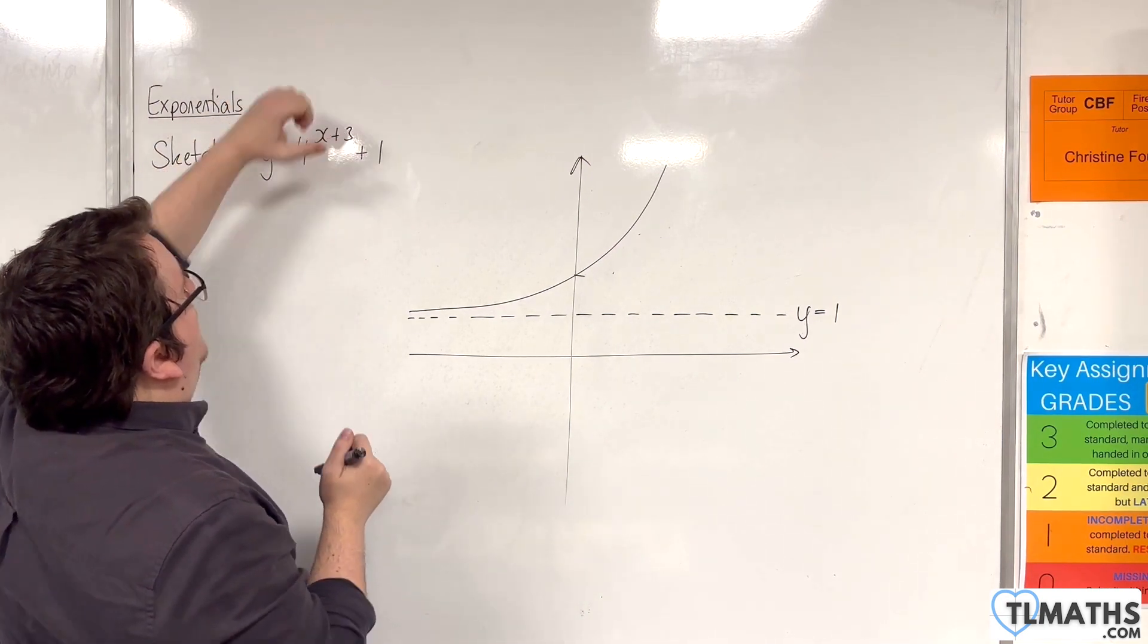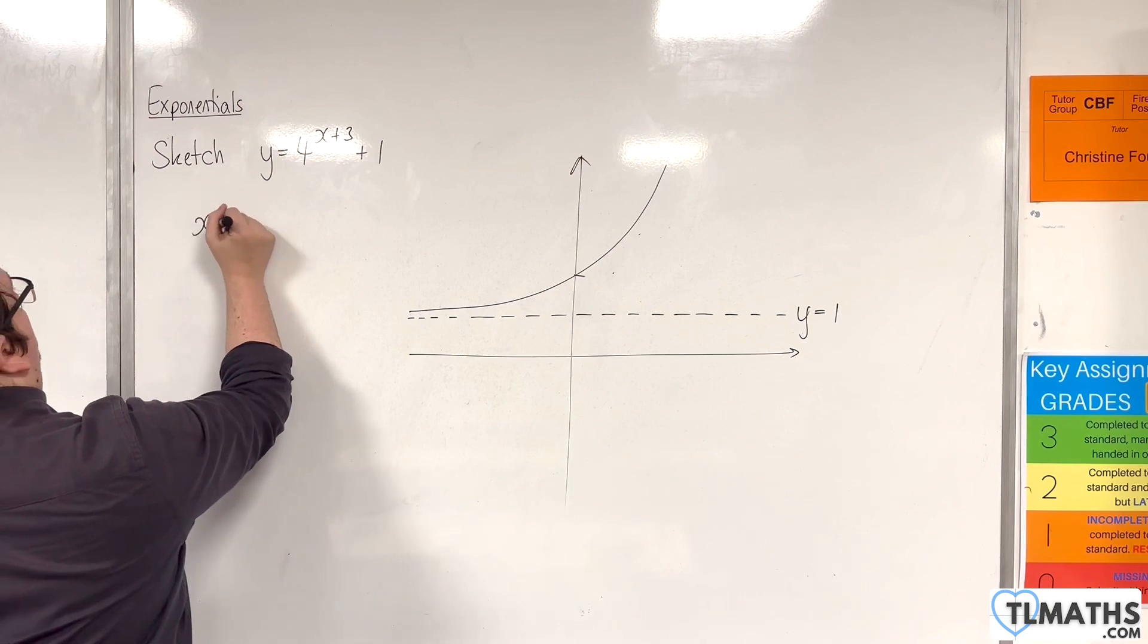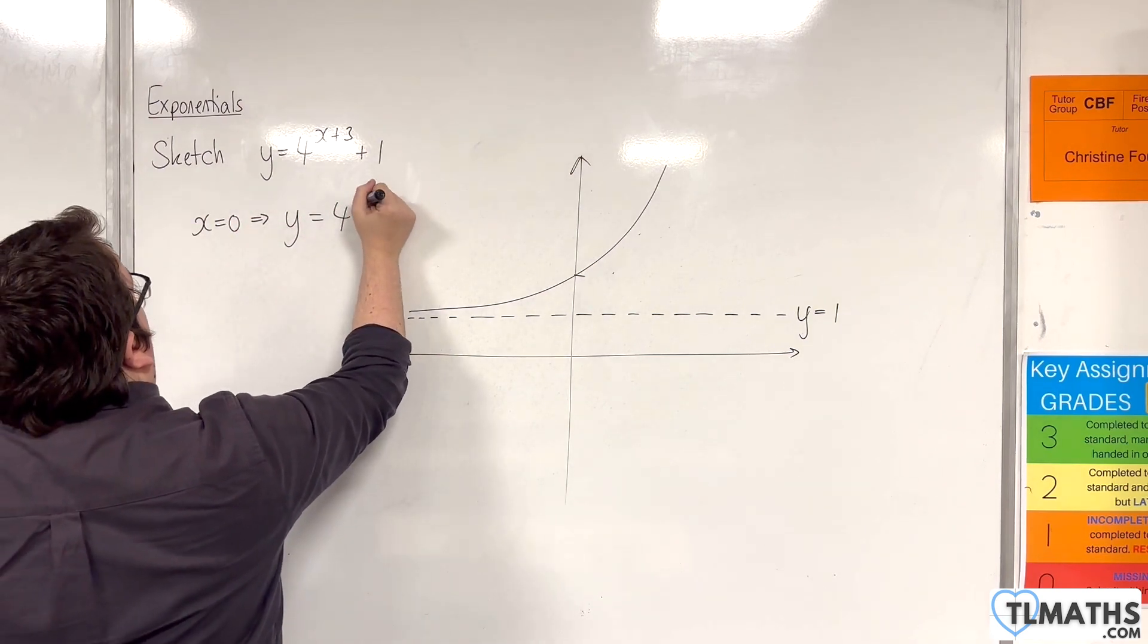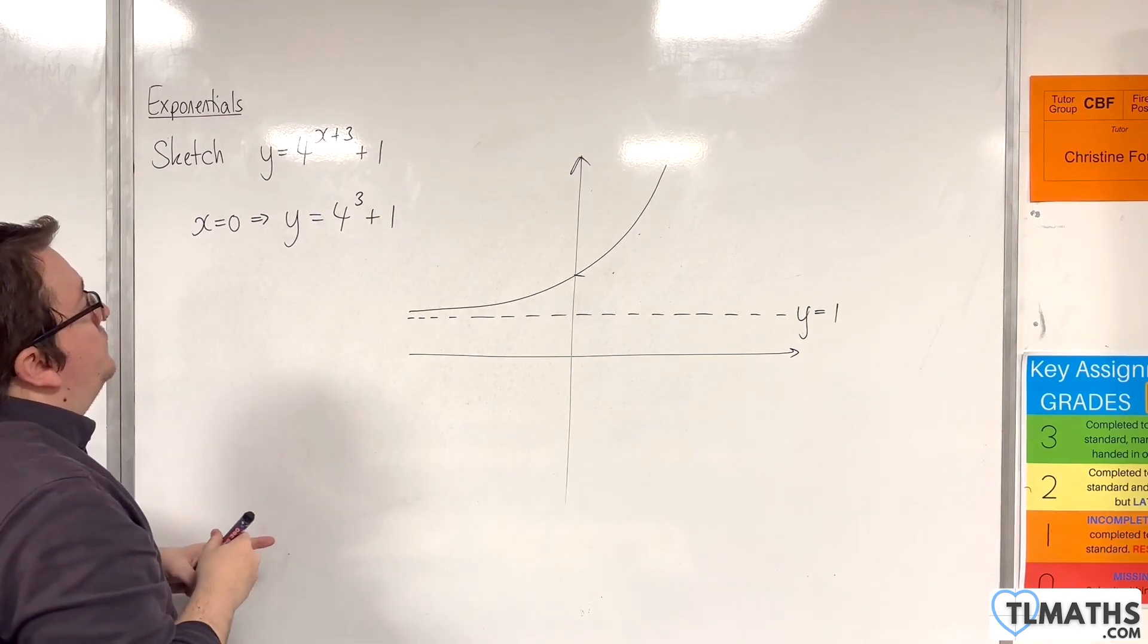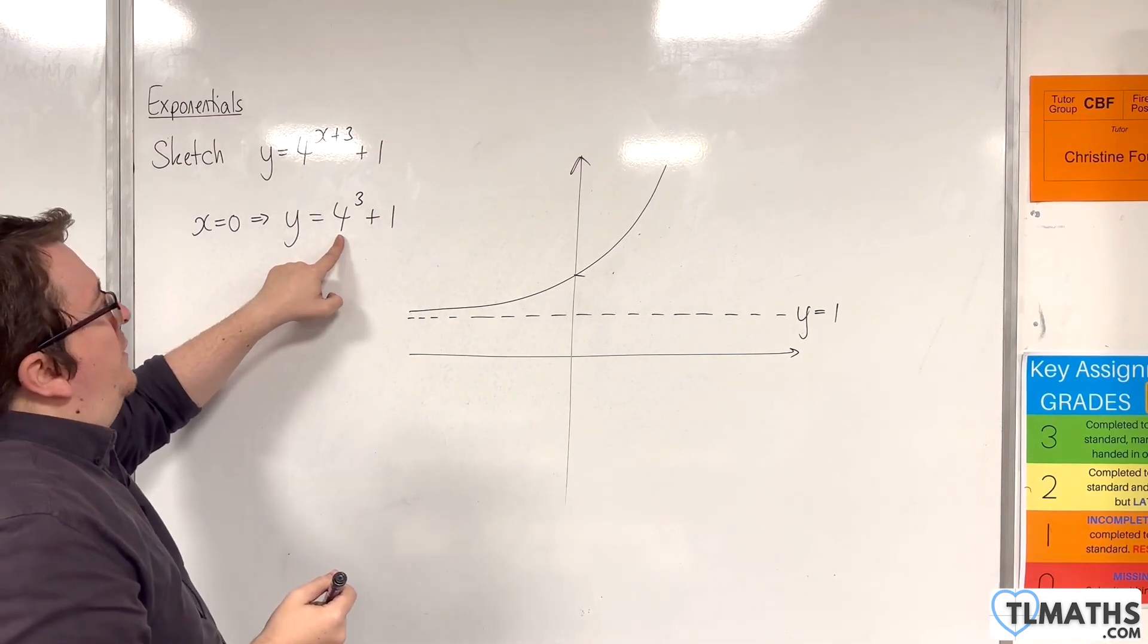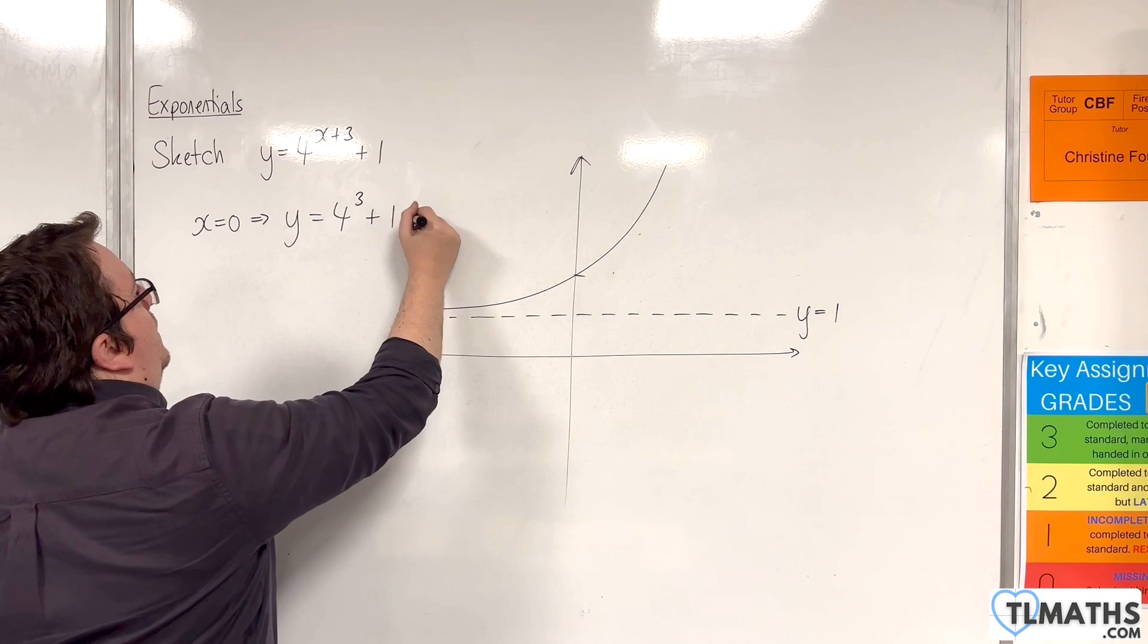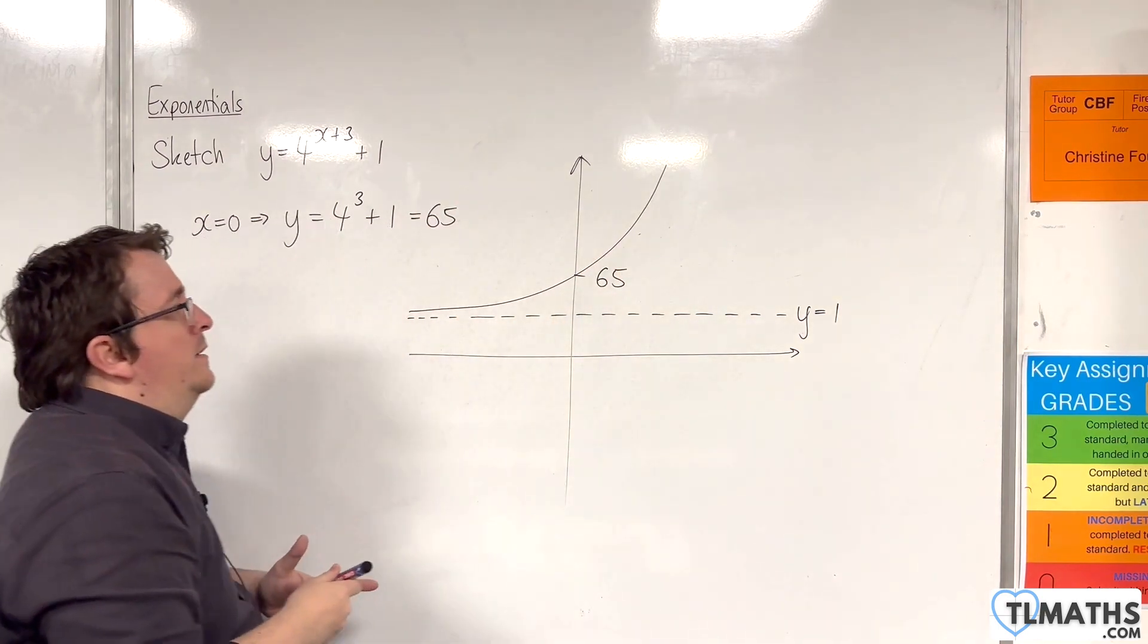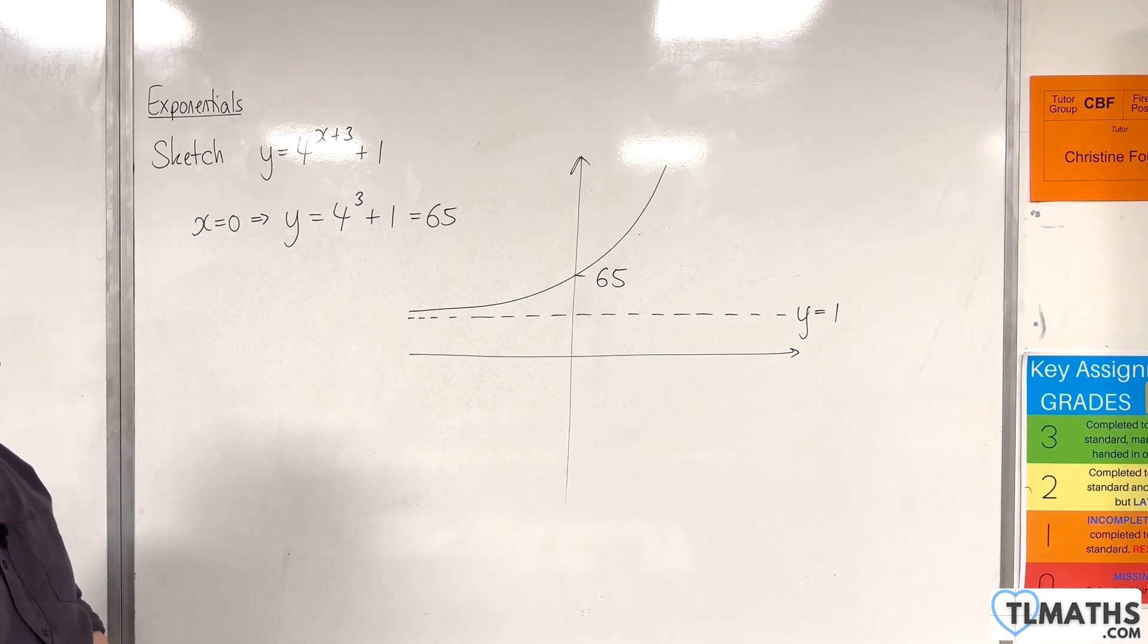We're going to have 4 to the 3 plus 1. So when x is 0, y is 4 to the 3 plus 1. So 4 cubed is 64 plus 1 is 65. So that is where my curve is crossing the y-axis.